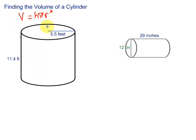Let's take a look at this first cylinder. We want to find the volume. So we have V equals, H is the height. The height of this particular cylinder is 11.4 feet. So 11.4 times pi.